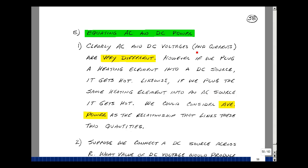Clearly, AC and DC voltages and currents are very different. However, if you plug a heating element into a DC source, it gets hot. Likewise, if we plug the same heating element into an AC source, it likewise gets hot. We could consider average power as a way to equate these two quantities.